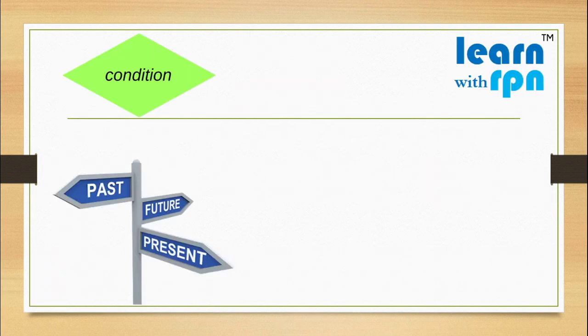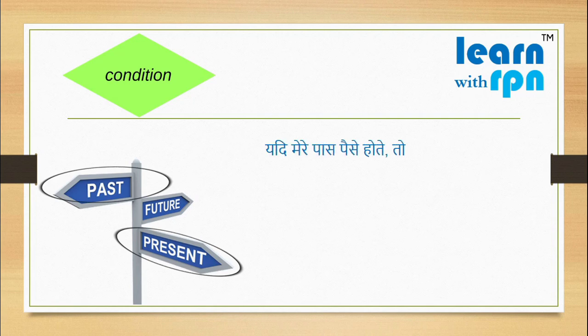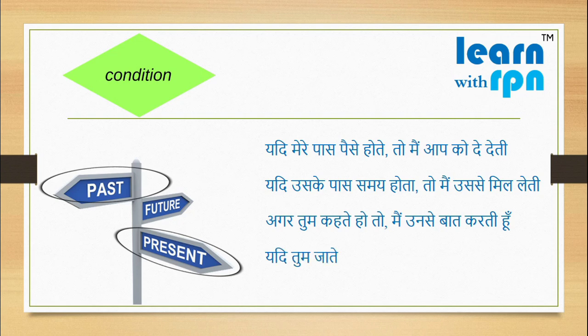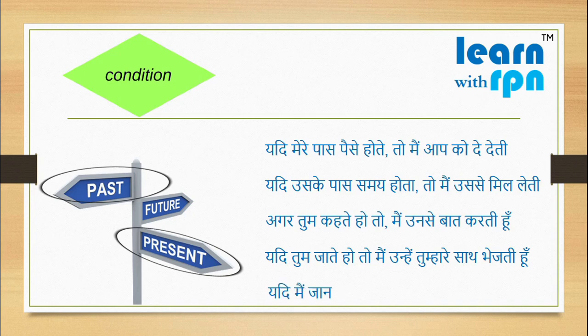Here are some examples of present and past conditional sentences. यदि मेरे पास पैसे होते, तो मैं आपको दे देती. यदि उसके पास समय होता, तो मैं उससे मिल लेती. अगर तुम कहते हो, तो मैं उनसे बात करती हूँ. यदि तुम जाते हो, तो मैं उन्हें तुम्हारे साथ भेजती हूँ. यदि मैं जानती, तो तुम्हें नहीं बताती.